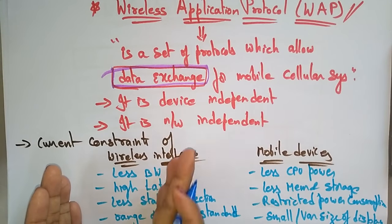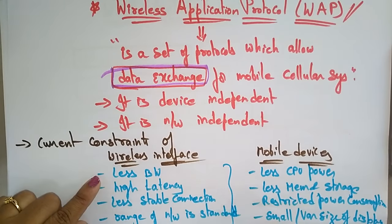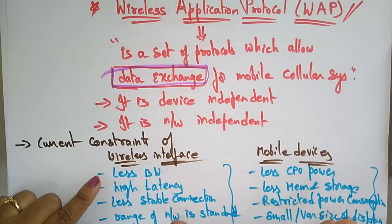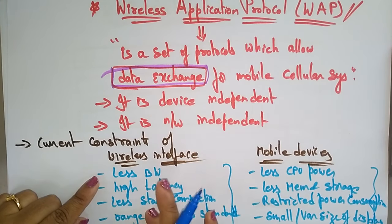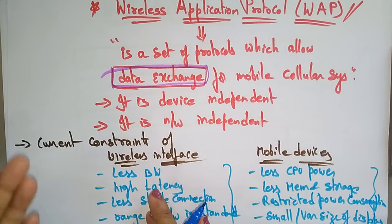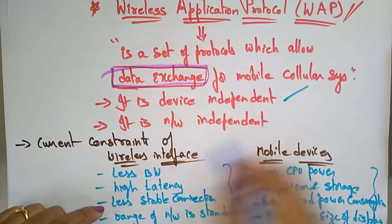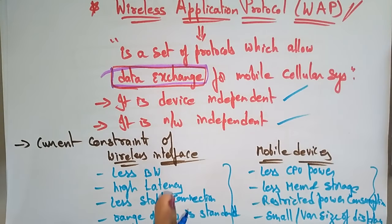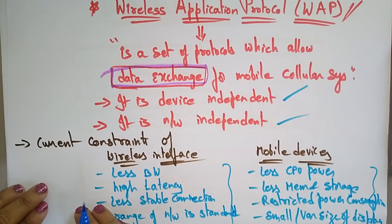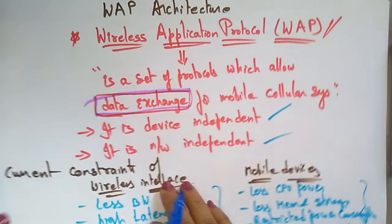Even though the wireless interface and mobile devices have these constraints and drawbacks, the Wireless Application Protocol supports both — because it is device independent and network independent. It doesn't matter what type of device or network you are using. WAP is a set of protocols which allows data exchange for mobile cellular systems.